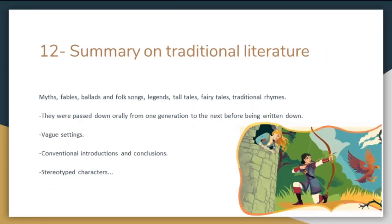For the last part, here is a summary of traditional literature as a whole. All of it — myths, fables, ballads and folk songs, legends, tall tales, fairy tales, and traditional rhymes — share these characteristics: unknown authorship; passed down aurally from one generation to the next before being written down; conventional introductions and conclusions; vague settings; stereotyped characters; anthropomorphic figures; apparent cause and effect relationships; and happy endings for the heroes and heroines. Some also share verbal patterns and musicality. Now that we've learned about traditional literature, we are going to present the piece of traditional literature we chose for our lesson plan.